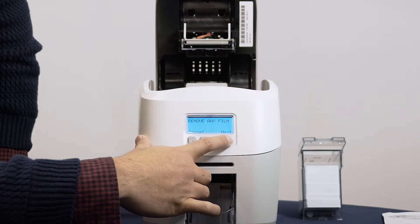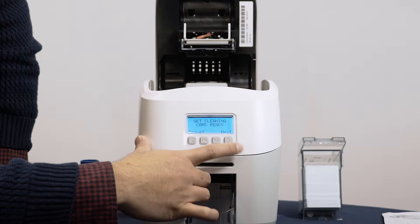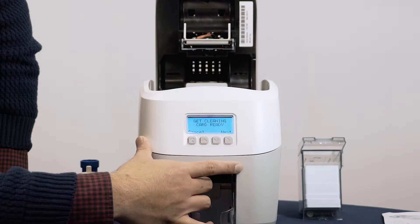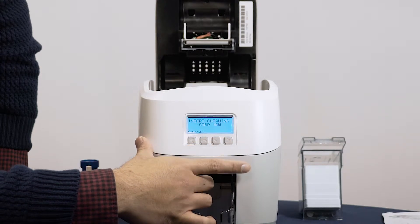Keep the lid open. The display will ask you to get a cleaning card ready. Press Next. You will be asked to insert the cleaning card. The rollers inside the printer will automatically start turning.